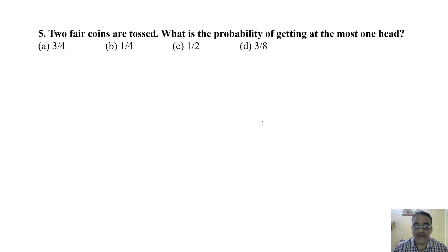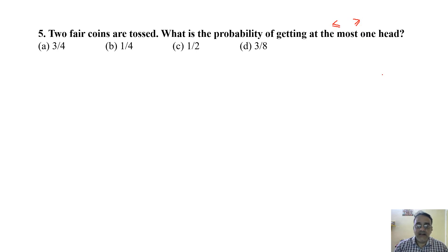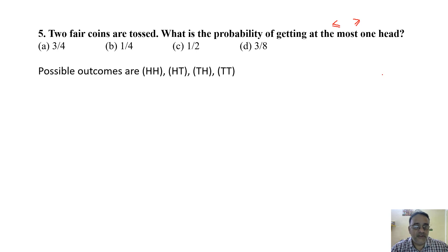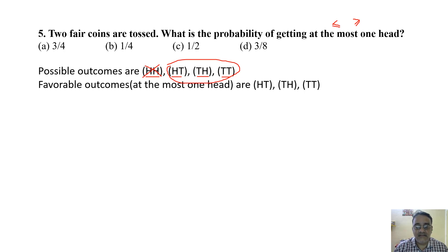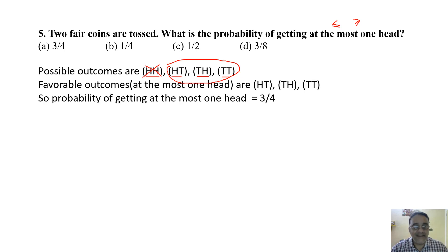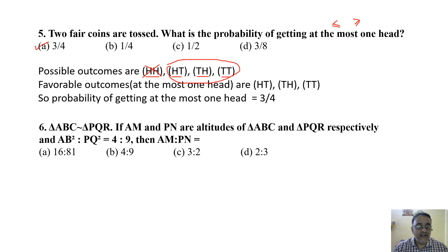Question 5: Two fair coins are tossed. What is the probability of getting at most one head? 'At most one head' means 0 or 1 heads. The four possible outcomes are HH, HT, TH, TT. Excluding HH, there are three favorable outcomes: HT, TH, TT. So the probability is 3/4. The correct answer is option A.